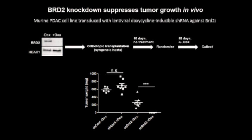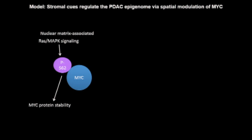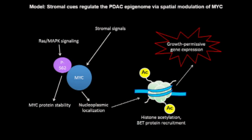In conclusion, in RAS mutant pancreatic cancer cells, MYC is phosphorylated on serine-62 and stabilized downstream of RAS-MAPK signaling, but is in part localized to an insoluble nuclear fraction — what we now believe is the nuclear matrix. Signals from the fibroinflammatory stroma cause MYC to accumulate in the nucleoplasm and increase its association with promoters of stroma-inducible genes that support proliferation. These stromal signals also lead to increased histone acetylation, BET protein recruitment, and ultimately induction of a growth-permissive gene expression program. Genetic or pharmacologic inhibition of the bromodomain family, and BRD2 in particular, suppressed these transcriptional changes and pancreatic tumor growth in vivo.